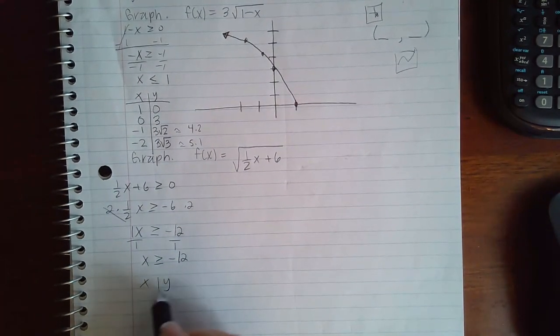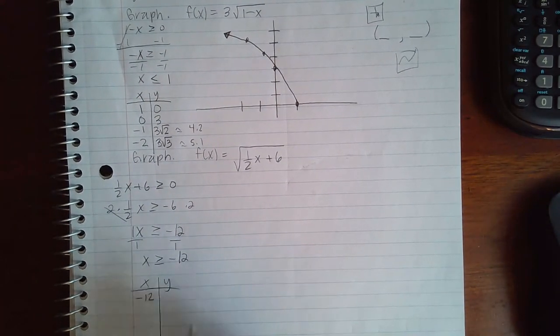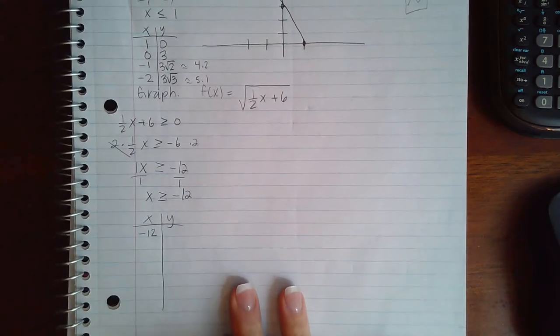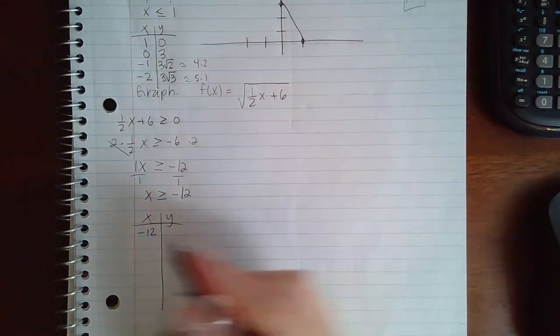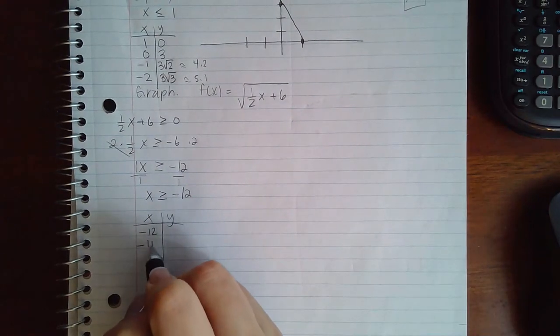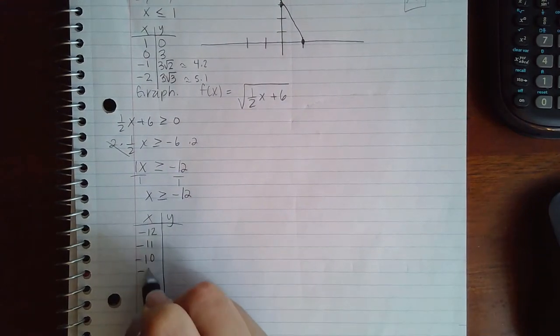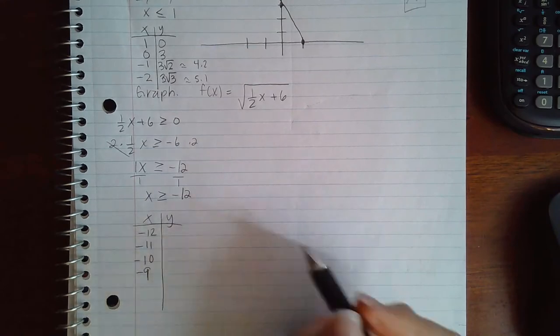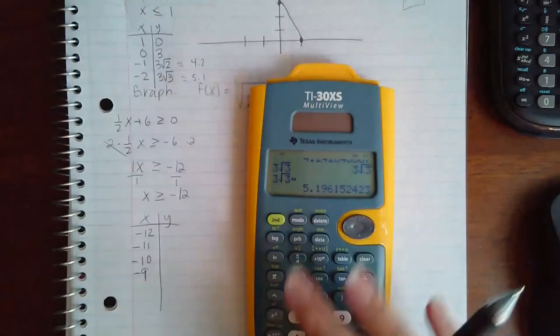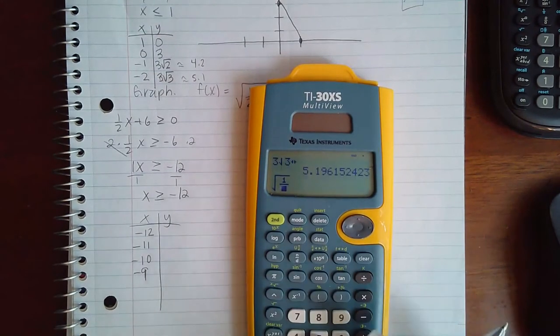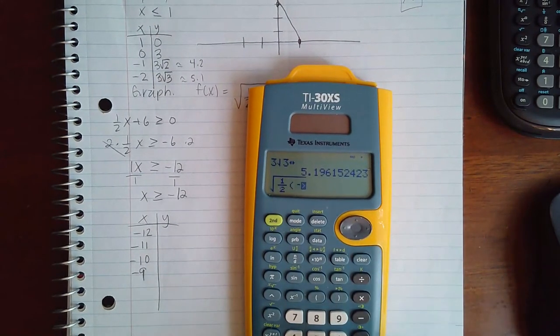And if I divide that by 1, it's still 12. So here I have to start off with the x value of negative 12, but I have to pick numbers that are greater than negative 12, which means to the right of negative 12, so like negative 11, negative 10, and negative 9.